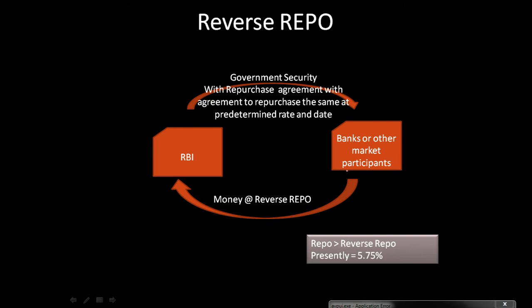The repo rate is always greater than the reverse repo rate. To understand why: if the reverse repo were 5% and repo were 4%, a bank could borrow from the RBI at 4% and immediately lend back to the RBI at 5%, creating an arbitrage situation — which is why this would never happen. That's why repo is always greater than reverse repo. Previously, the difference between repo and reverse repo was 50 basis points; presently it has been reduced to 25 basis points.